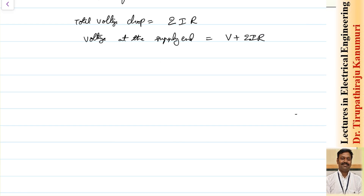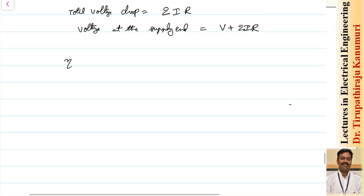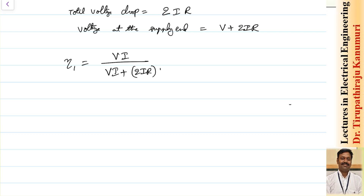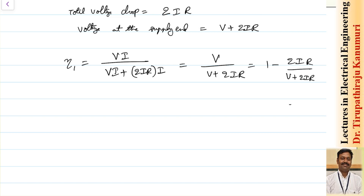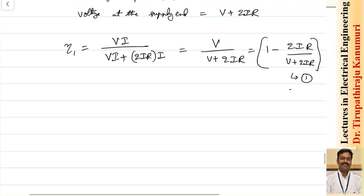So let us try to calculate the efficiency of the system. The efficiency will be output — V multiplied by I — divided by output plus losses. Output plus losses will be V×I plus the drop 2IR multiplied by the current. This simplifies to V divided by (V plus 2IR), which I can write as 1 minus 2IR divided by (V plus 2IR).